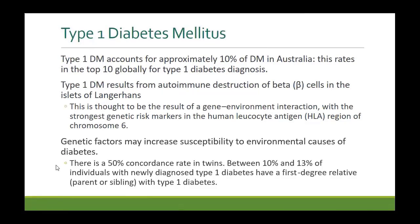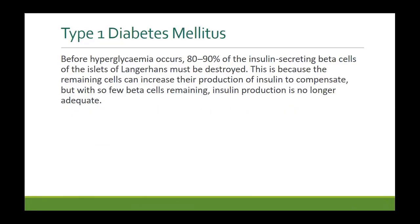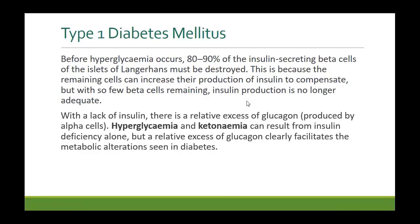Between 10 to 13 percent of individuals with newly diagnosed Type 1 diabetes have a first-degree relative with the condition, so it runs in families. Before diabetes becomes clinically manifest — meaning before hyperglycemia develops — 80 to 90 percent of beta cells must already be destroyed. With the loss of insulin, there is a relative excess of glucagon, since alpha cells are spared. This creates an imbalance: insulin is low and glucagon is secreted more than normal.